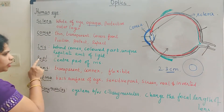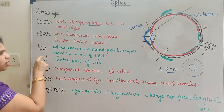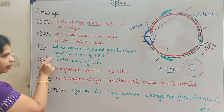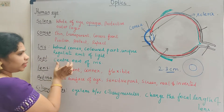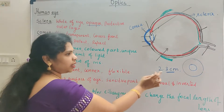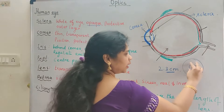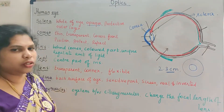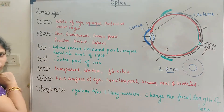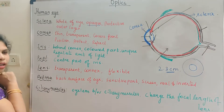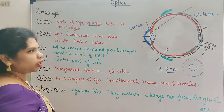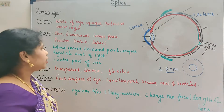Next one is the pupil. The pupil is the center part of the iris. You work within the iris to control the amount of light entering the eye.